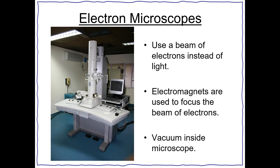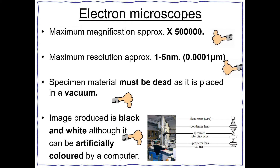Electron microscopes use a beam of electrons instead of light. Electromagnets are used to focus the beam of electrons, and there is a vacuum inside the microscope. Electron microscopes are good because they have a maximum magnification of about times 500,000 and a maximum resolution of approximately 1 to 5 nanometres. The big downside is that the specimen must be dead because it's placed in a vacuum, and the image produced is black and white, although you can artificially colour it using a computer.